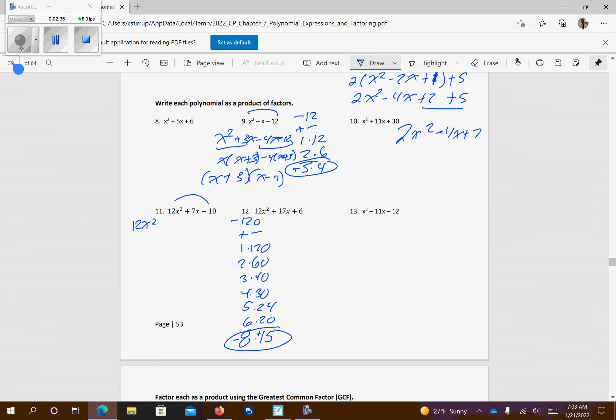And I get 12x squared minus 8x plus 15x minus 10. Again, combine like terms, or what we have in common, we have a 4x, so that gives me 3x minus 2. This has a positive 5, so it's going to give me 3x minus 2 as well, 3x minus 2's match, that's what you want, 3x minus 2. What do you have left? You have 4x plus 5, that's your other one.